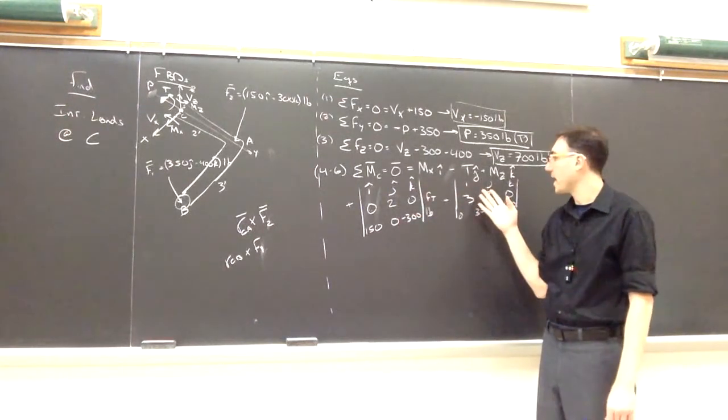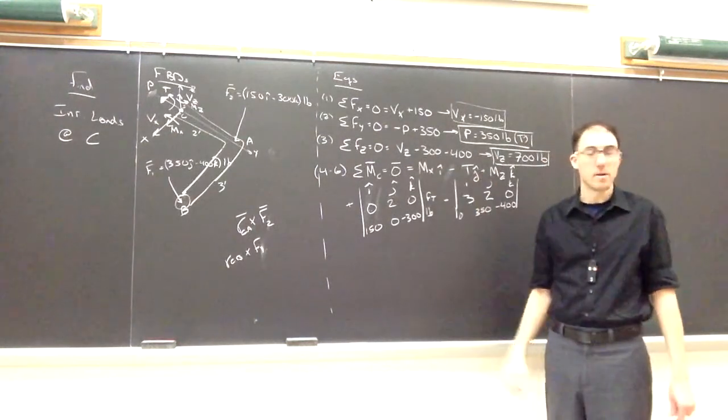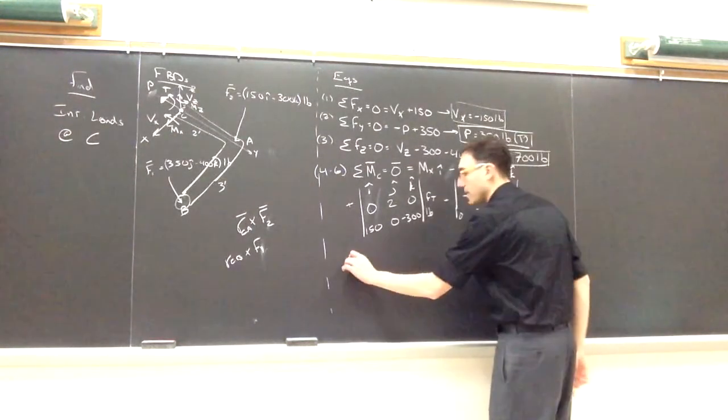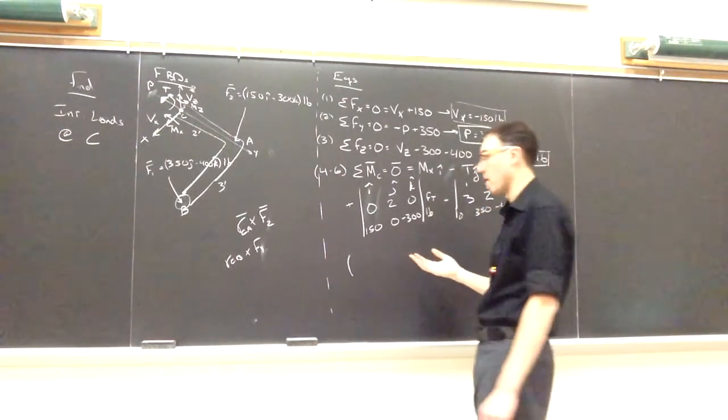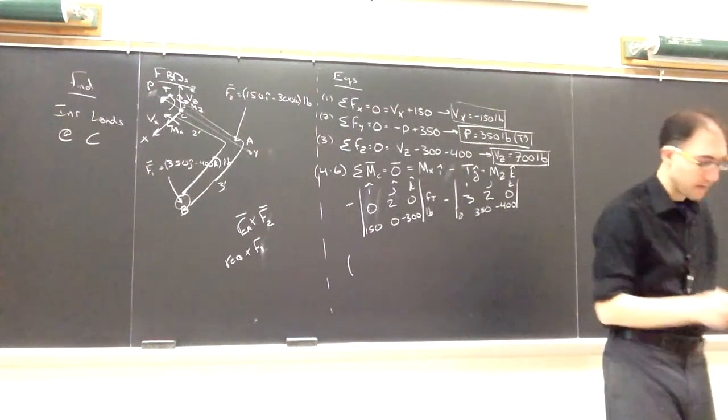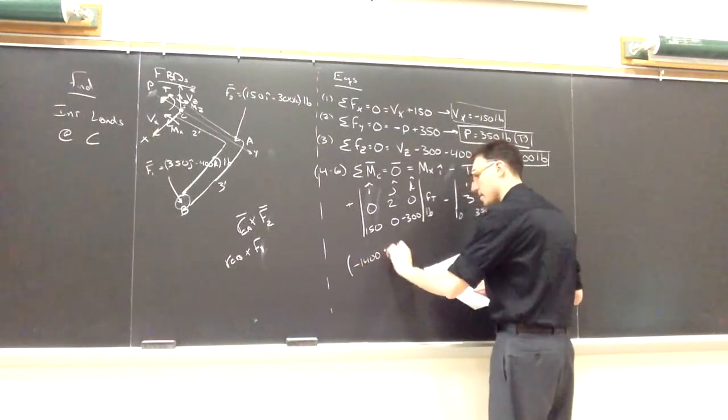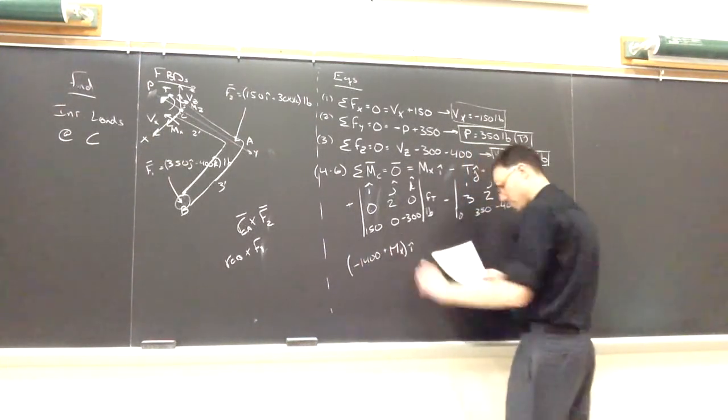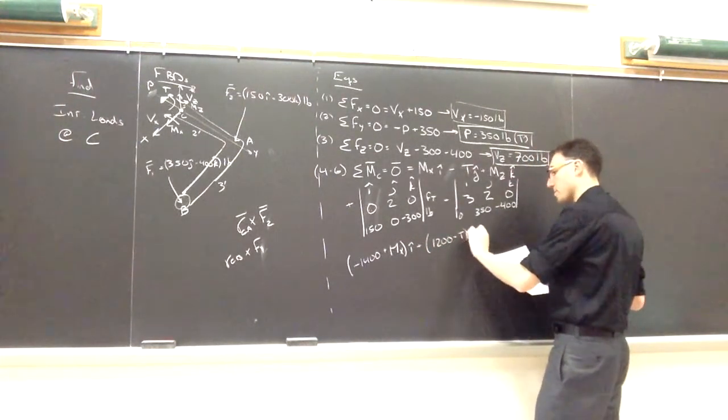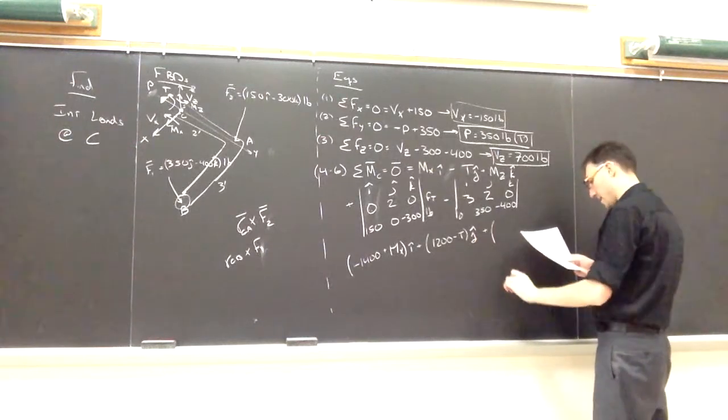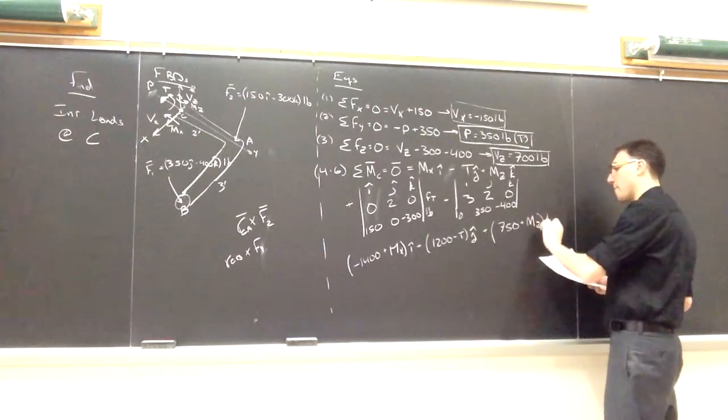When I expand these, I'll have IJK components. I'll have IJK components. I already attach the I, the J, and the K to the couples here. So I can expand this out and group the like terms together. I won't go through all those details. We'll go over those again during our review. But if I expand those out, I get negative 1400 plus MX have I terms. 1200 minus T are my J terms. and 750 plus MZ make up my K terms.